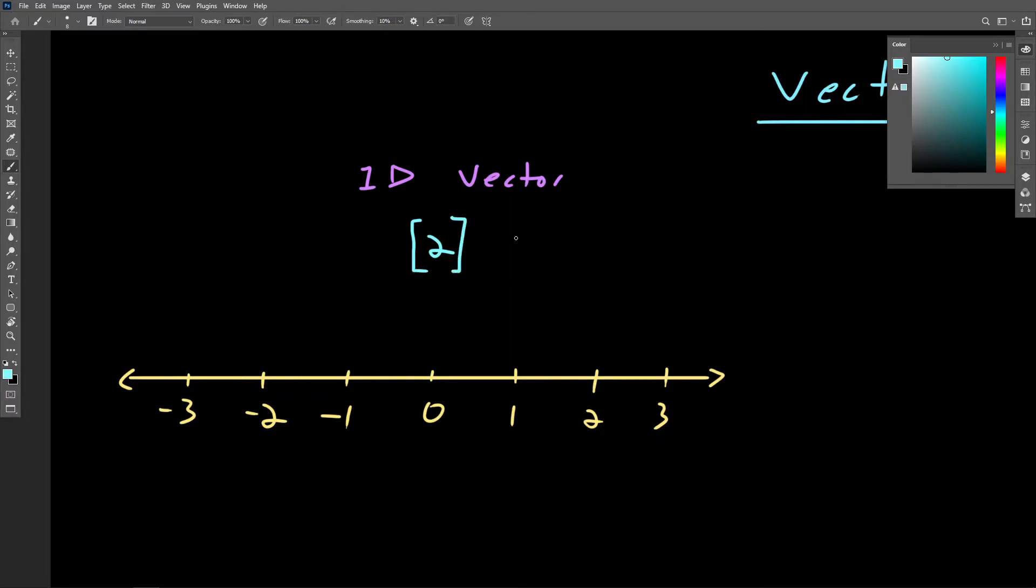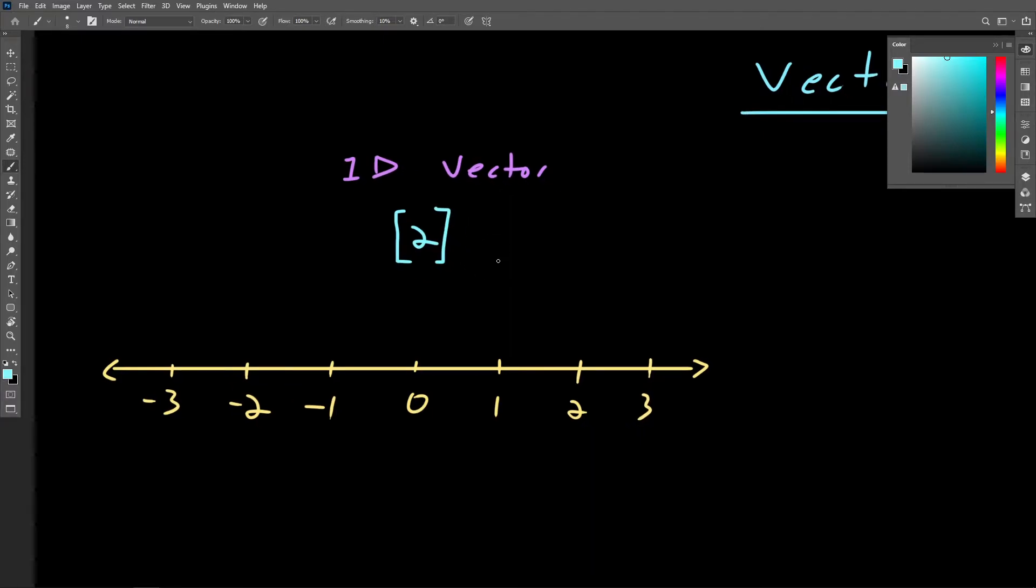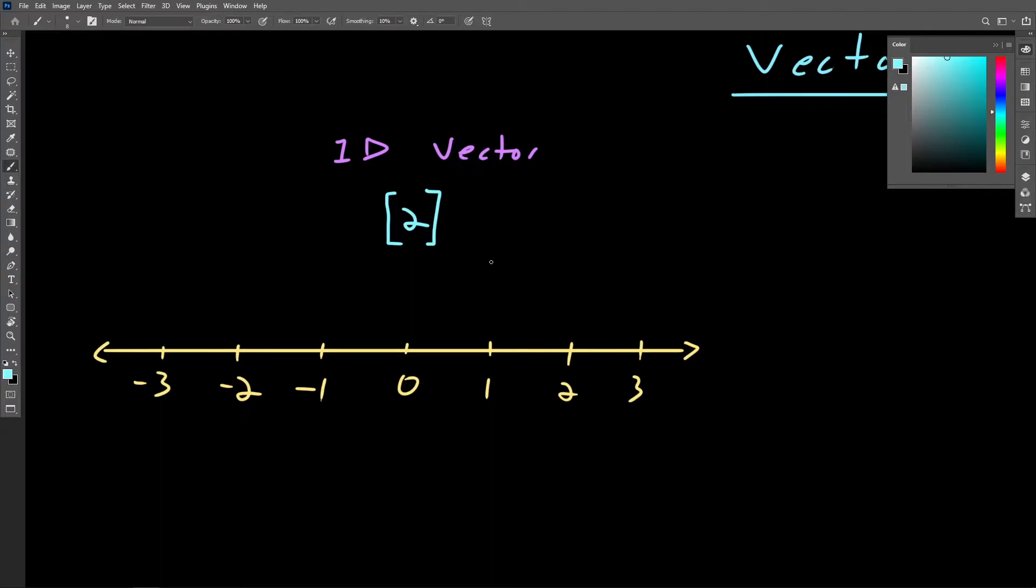So if we were to relate our understanding of counting and scalar arithmetic to vectors, we could consider a scalar to be a position, and that's crucial to understand here, a position on a number line. This position can be to the right of zero, which would give us a positive number, or to the left, which would give us a negative number.